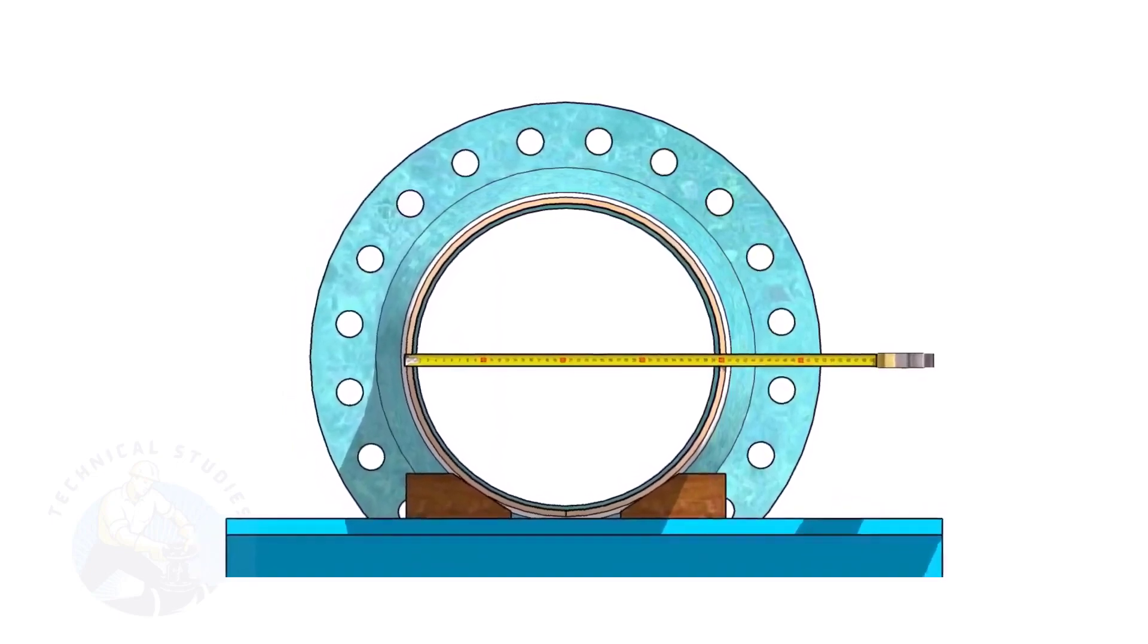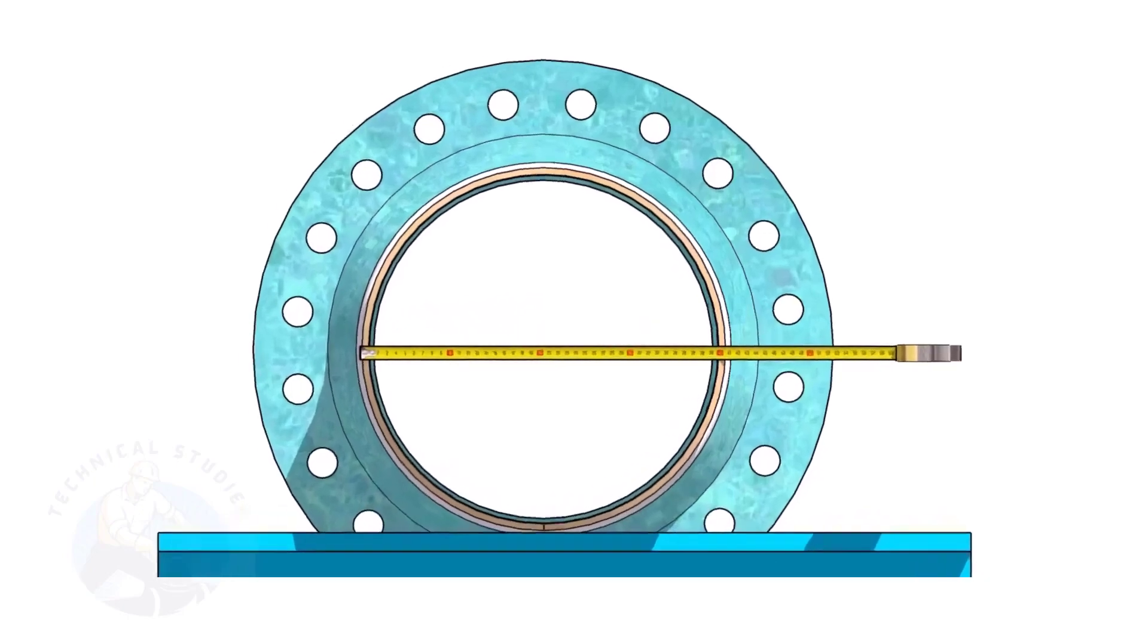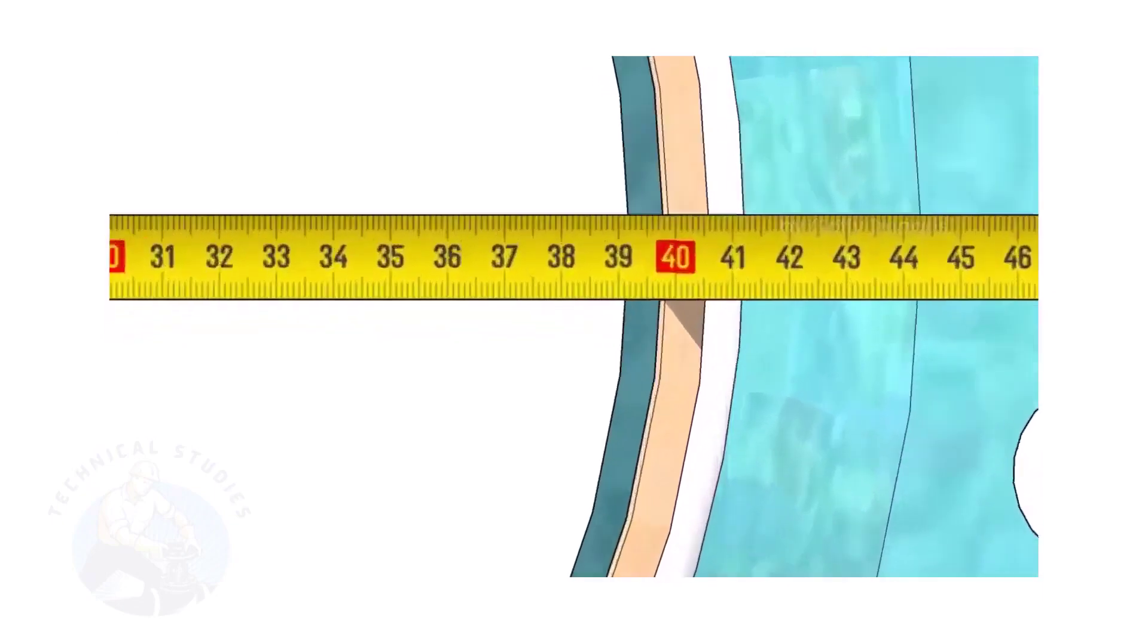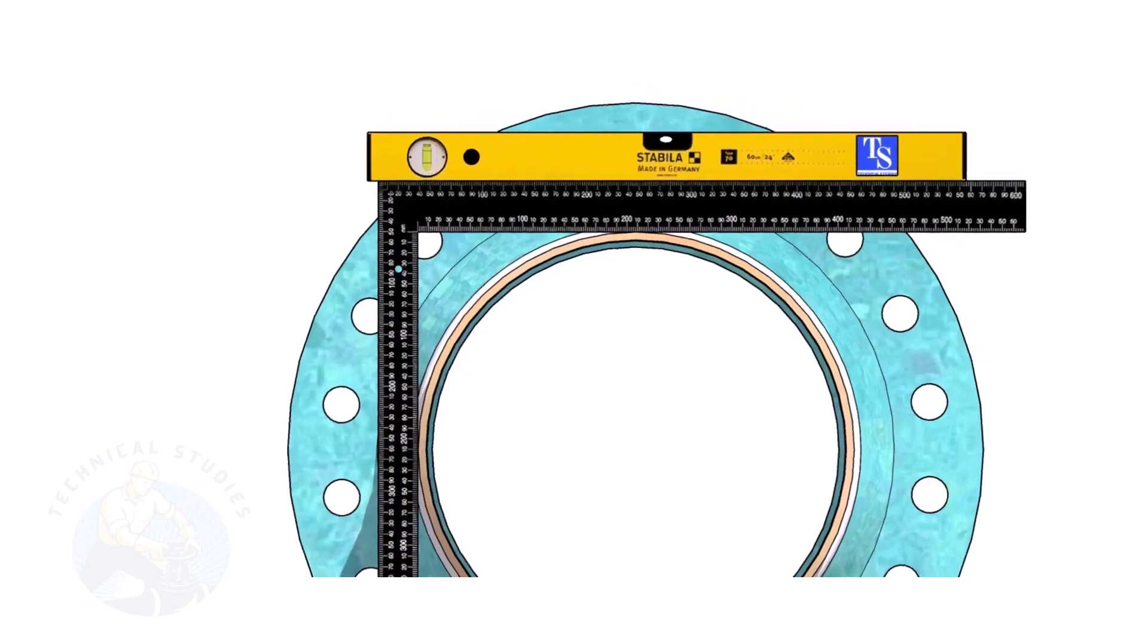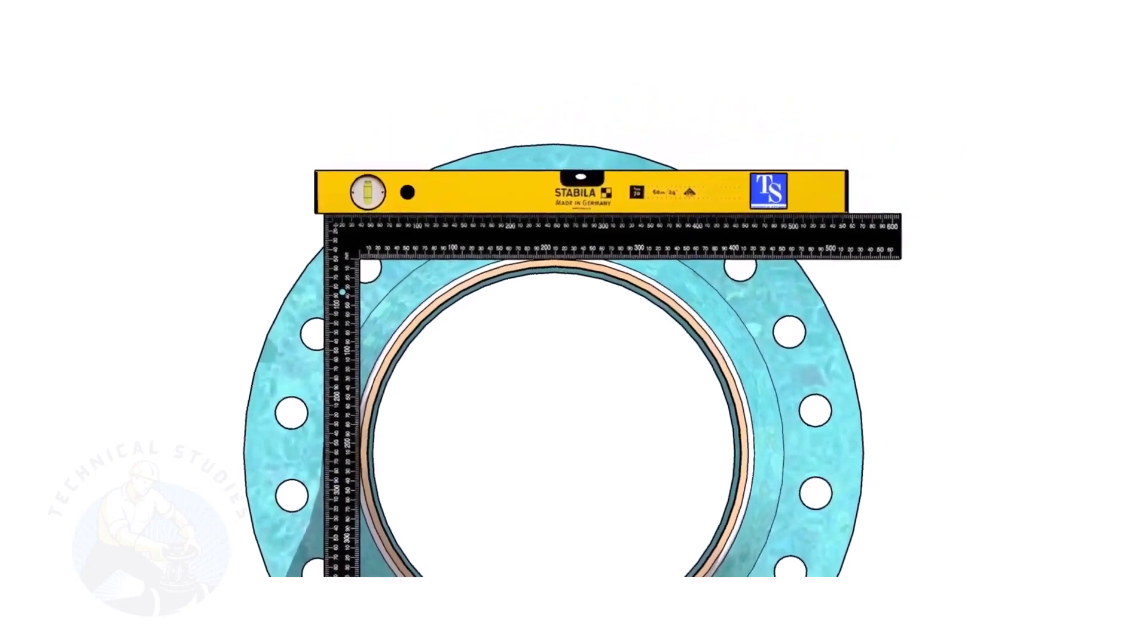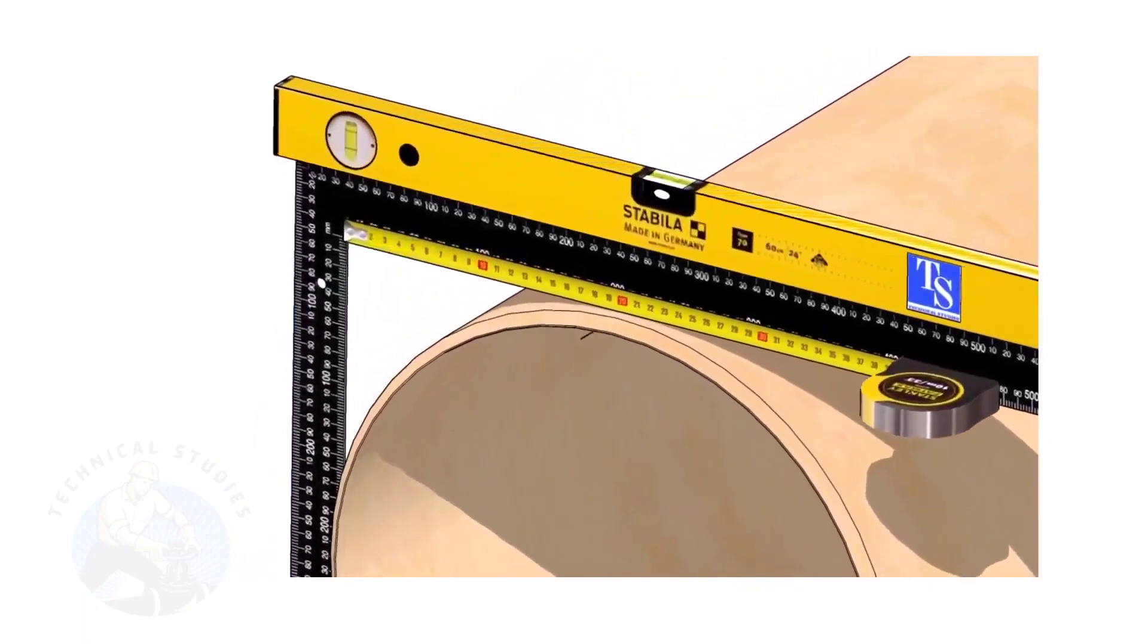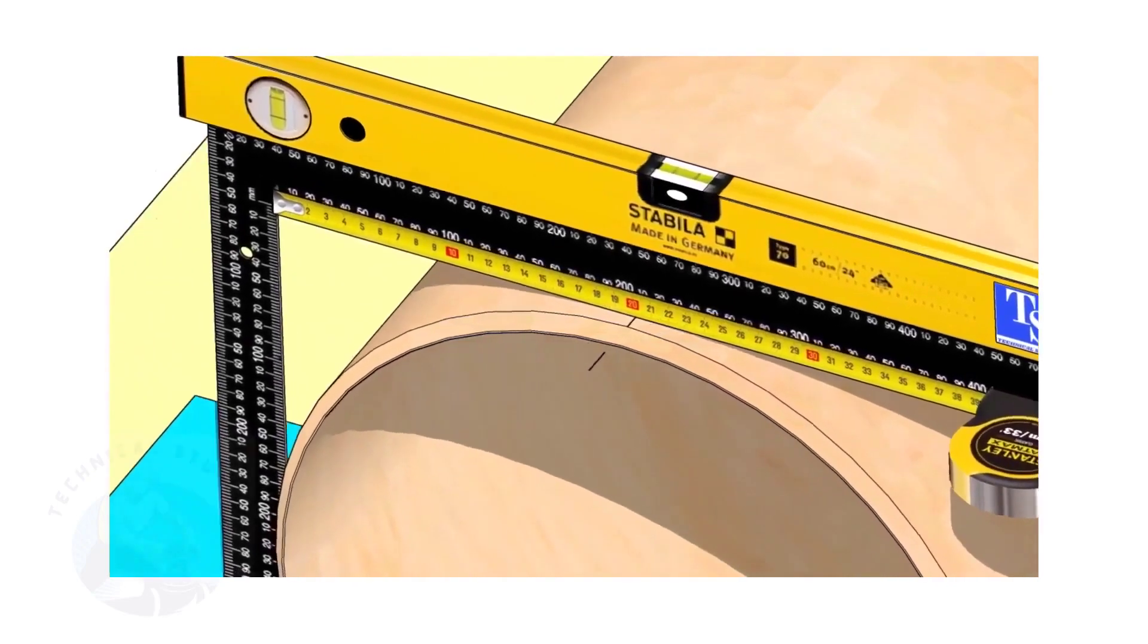Check the outer diameter of the pipe. Here, the diameter of the pipe is 406 millimeters. Hold a large right angle on the pipe as shown. Put a spirit level on the right angle and correct the top level. Mark half OD of the pipe on the top side. Here, the half OD is 203 millimeters.